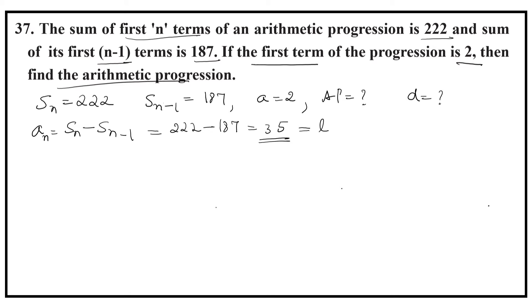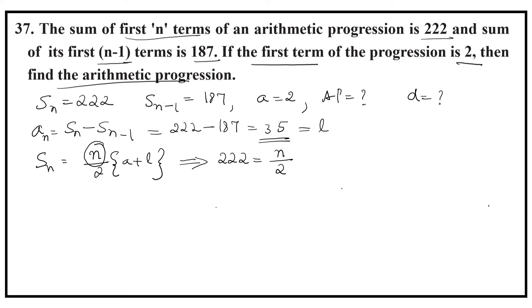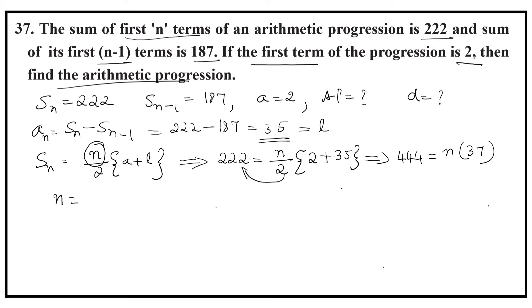That nth term, 35, is also the last term. Using the concept that Sn equals n by 2 into (a plus l), we can find n. Substituting: Sn is 222, equals n by 2, a is 2, and l is 35. That gives 222 equals n into (2 plus 35), which is 37. So n equals 444 divided by 37, that is 12.